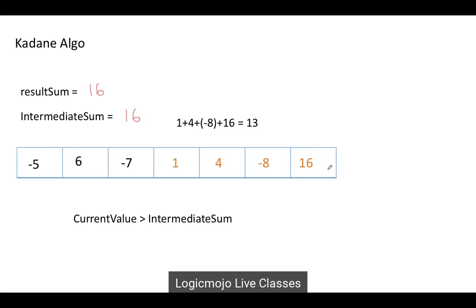Now the array has ended. In this complete traversal, the maximum sum subarray we get is this single element, which is 16. That's how you solve this problem in O(n) time complexity.